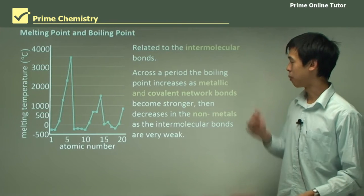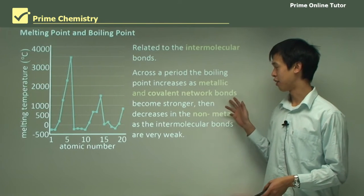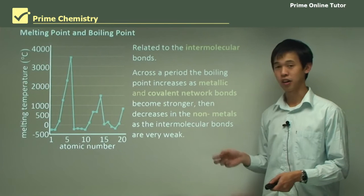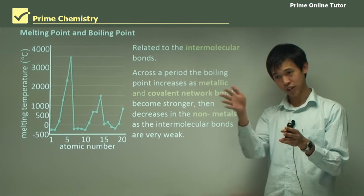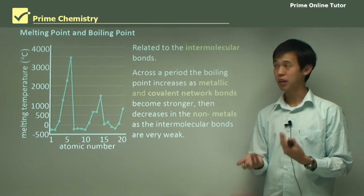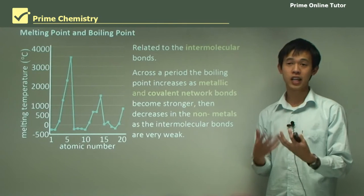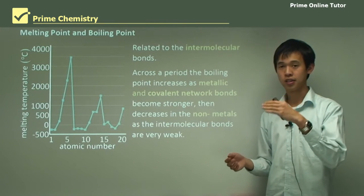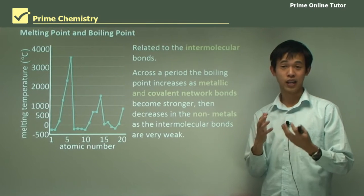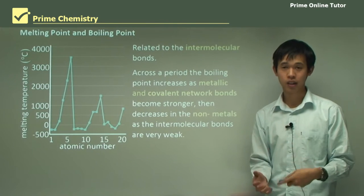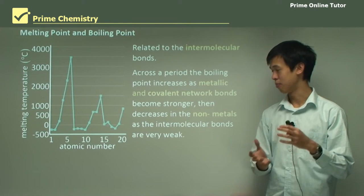Across the period, the boiling point increases as metallic and covalent network bonds become stronger. If you look at the first group and as we move slowly across, we see that the boiling point and melting point tends to increase because the bonds are getting stronger. As we go through the transition metals the bonds get stronger. Once we hit covalent network species like carbon and silicon, that becomes very strong and very difficult to melt.